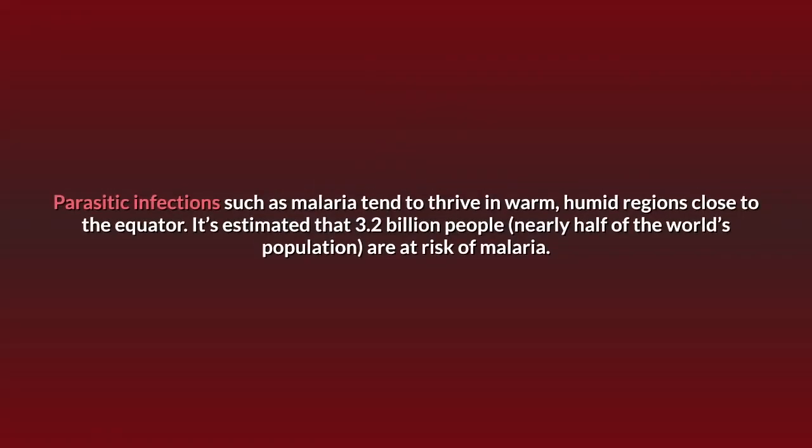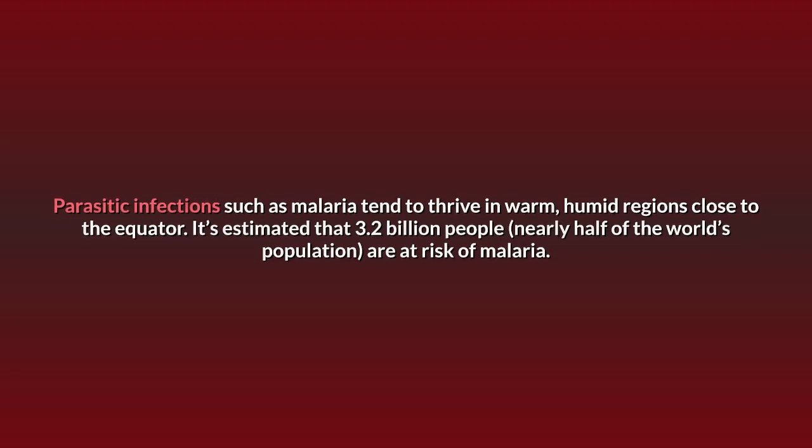Parasitic infections such as malaria tend to thrive in warm, humid regions close to the equator. It is estimated that 3.2 billion people — nearly half of the world's population — are at risk of malaria.